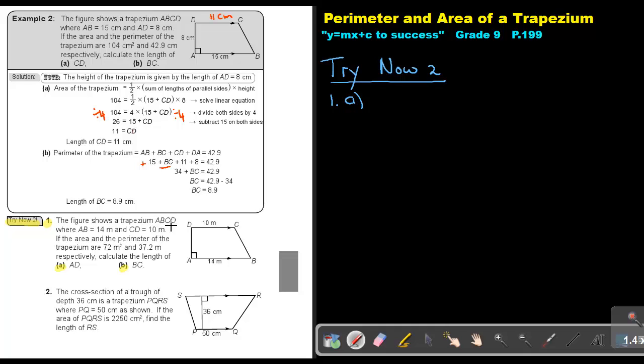The figure shows a trapezium ABCD, where AB is 14, CD is 10. If the area and the perimeter of the trapezium is 72 and this, so remember, the square one will be the area. And the one without a square will be the perimeter. Or, the first one will be the area, because they mention area first. And then, they mention perimeter, so that will be the second one. Calculate the length of AD.